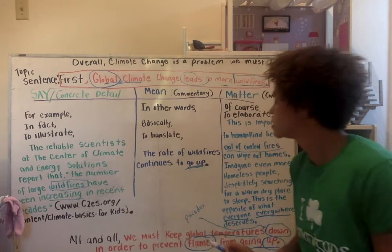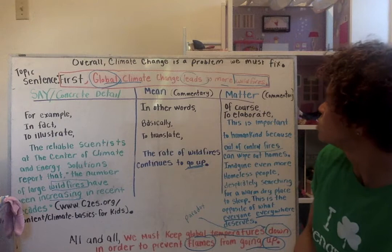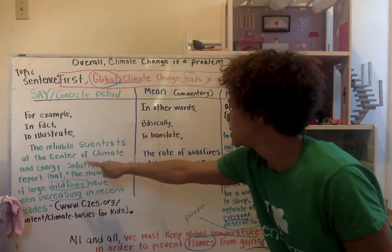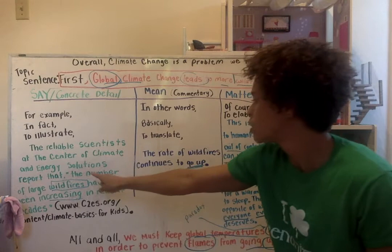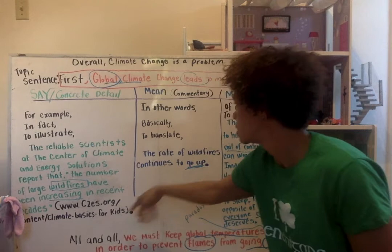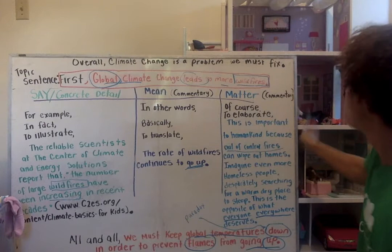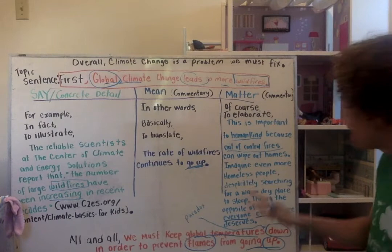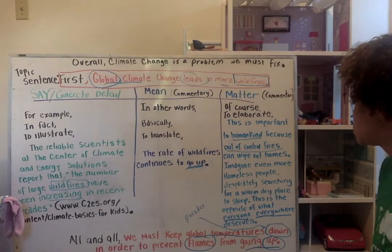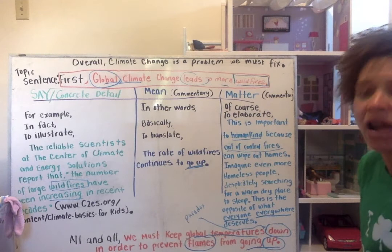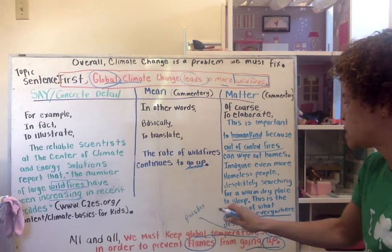I'm going to read the whole thing again. First, global climate change leads to more wildfires. For example, the reliable scientists at the Center of Climate and Energy Solutions report that the number of large wildfires have been increasing in recent decades. Parenthetical citation. To translate, the rate of wildfires continues to go up. To elaborate, this is important to humankind because out of control fires can wipe out homes. Imagine even more homeless people desperately searching for a warm, dry place to sleep. This is the opposite of what everyone everywhere deserves. All in all, we must keep global temperatures down in order to prevent flames from going up.